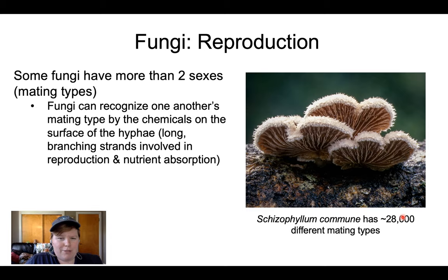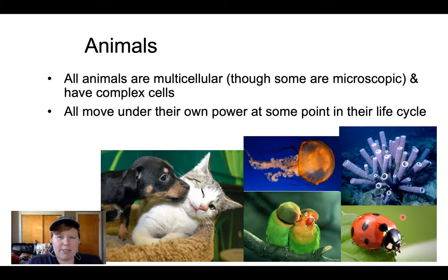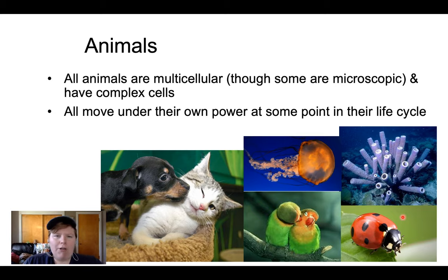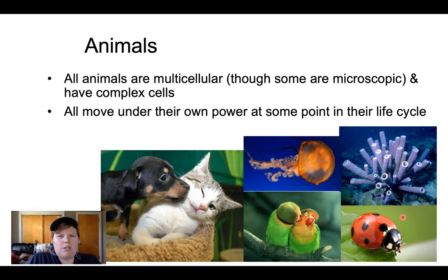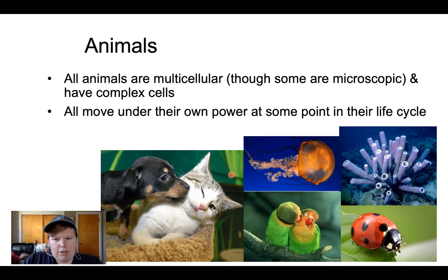That was fungi as a whole — really important for the environment in lots of capacities, and organisms we can thank for a lot of things that bring us joy. Now moving on to animals, the group we're probably all more familiar with. All animals are heterotrophs, all animals are multicellular — fungi could go from unicellular to multicellular, but all animals have multiple cells — and at some point in the life cycle, for the most part, all animals move under their own power. We range from cute fluffy mammals to jellyfish and sponges, in all kinds of different environments.